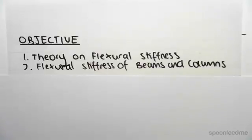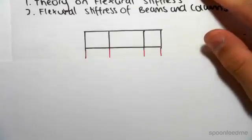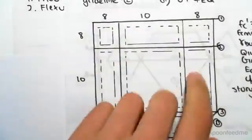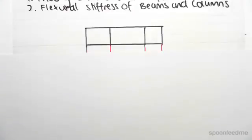Hey guys, the objective of this video is to talk a bit about the theory on flexural stiffness, and then we're going to be finding the flexural stiffness of our beams and columns. Just to put our problem in a bit of perspective, we've seen the plan of our building that looks like this, but the section through our building is going to look something like this.